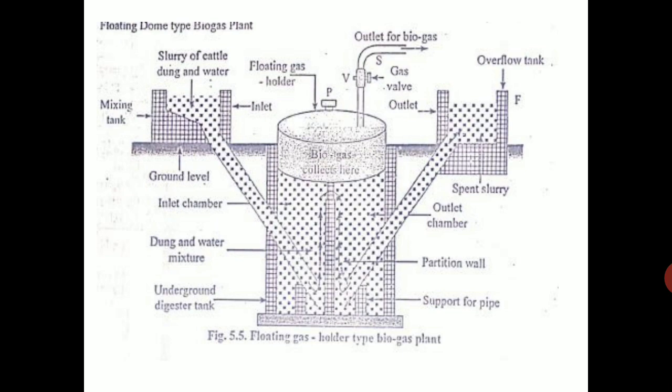You have the inlet chamber to the left and the outlet chamber to the right. The dung and water mixture enters the inlet chamber, which is also called the digester. In the digester, gas is produced by microbial action — that is, the action of bacteria. The gas is collected in the steel drum on top, and to take out the gas you have an outlet pipe with a valve. In the center of the digester there is a partition wall.